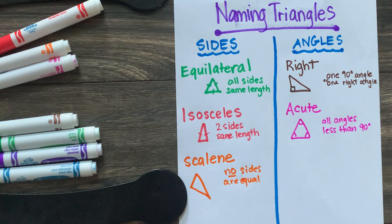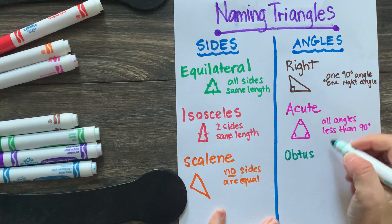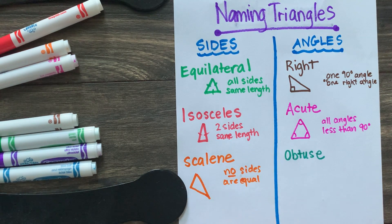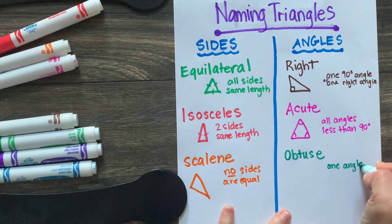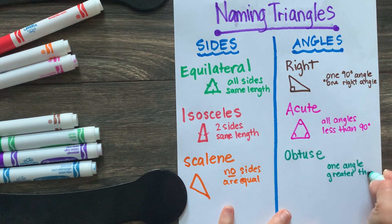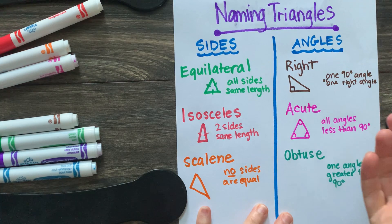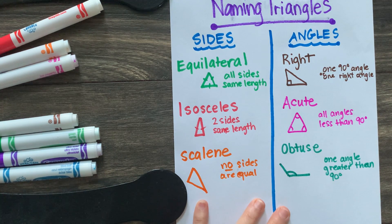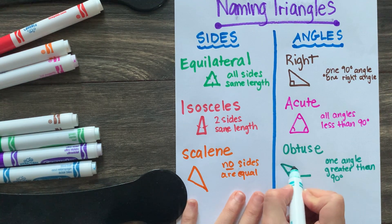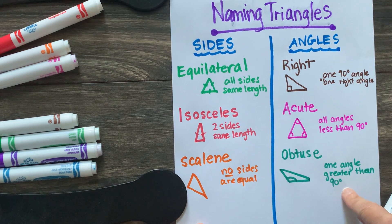My last one that I'm going to talk to you about is what we call an obtuse angle or an obtuse triangle. So an obtuse triangle is going to have a triangle with one angle that's greater than 90 degrees. So an obtuse triangle, the best way to do this is to actually draw an obtuse angle. So here's my obtuse angle. It's right here. It's very big, right? And then I'm going to go ahead and connect my two lines there. So an obtuse angle is only going to have one angle greater than 90 degrees.